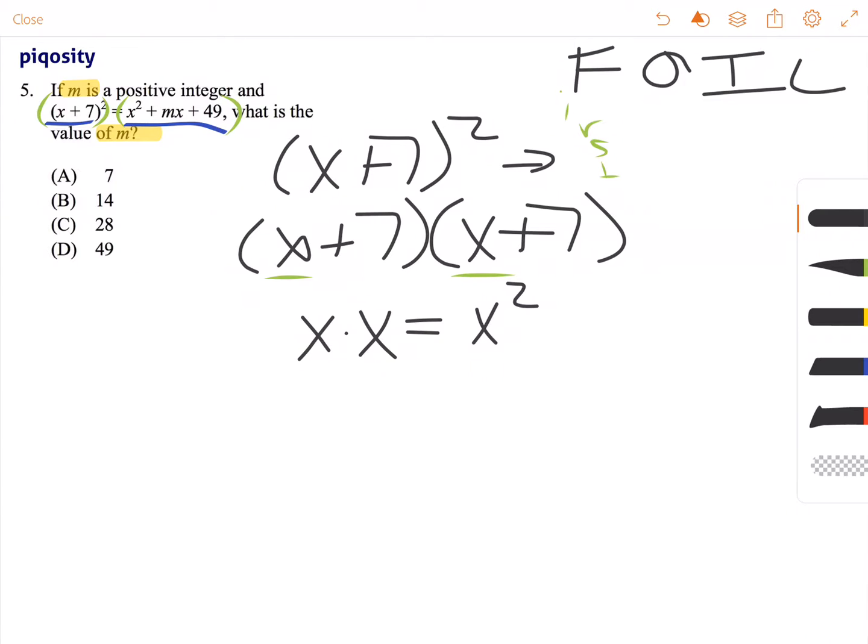Then we do our outers, which refer to this value again and this value here, the x and the 7. So let's multiply those two, 7x.